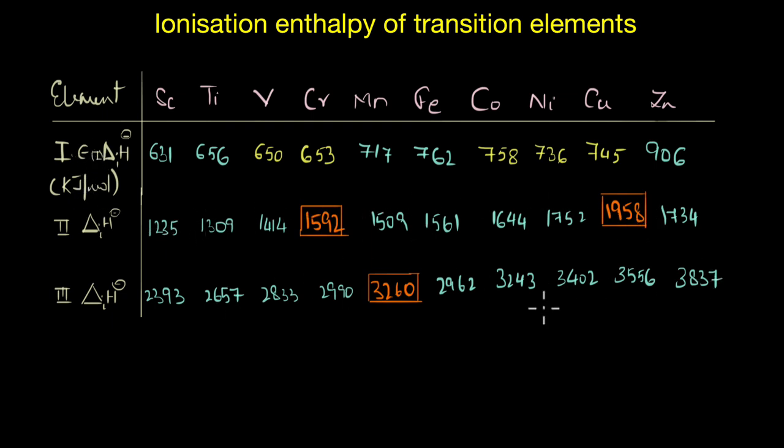Now if you look at the second ionization enthalpy values, you will see that chromium and copper have abnormally higher values than we would normally expect. If you look at the values here, you can see that they definitely stand apart from the rest of the elements in the series.